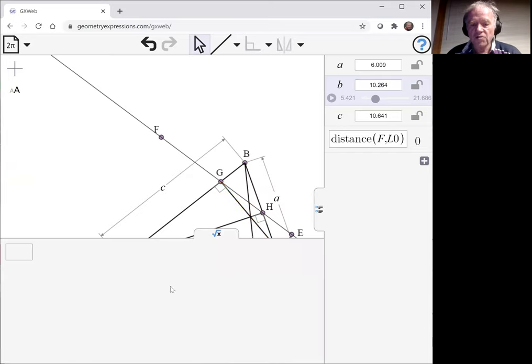This however is a symbolic panel, and if we type into this, then we're going to get proof that zero says yes indeed that point lies on that line.